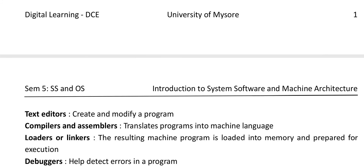Text editors help us to create and modify a program. Compilers and assemblers are system softwares which are used to translate programs into machine language — we have come across the C compiler. The loaders and linkers take the resulting machine program, load it into memory, and prepare it for execution. The debuggers help detect errors in a program.